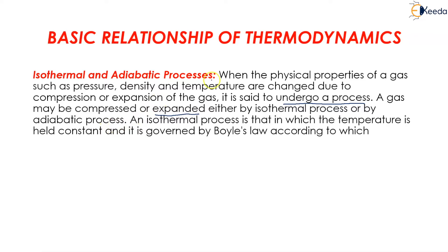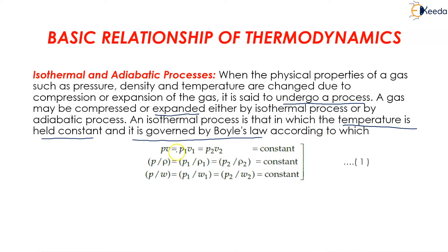An isothermal process is one in which the temperature is held constant, and it is governed by Boyle's law, according to which PV = P₁V₁ = P₂V₂ = constant. Consequently, P/ρ = P₁/ρ₁ = P₂/ρ₂ = constant, and P/ω = P₁/ω₁ = P₂/ω₂ = constant.